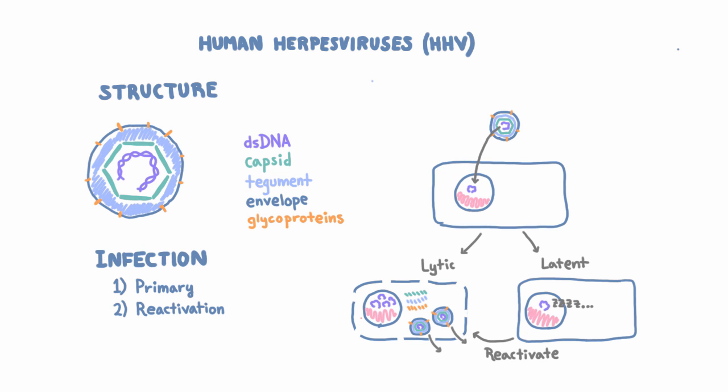That means at some later date you can get the second kind of infection: reactivation or recurrent infection. That happens when — perhaps because you're immunosuppressed or stressed — the latent virus becomes lytic again and starts the whole process over. This will look different from the primary infection because your immune system has already seen the virus and is more prepared to prevent spread. But the virus still has some opportunity to replicate, potentially cause disease, and potentially spread to other hosts. This is why it's very clever of the virus to become latent — it offers repeated opportunities to transmit to new hosts every time it reactivates.